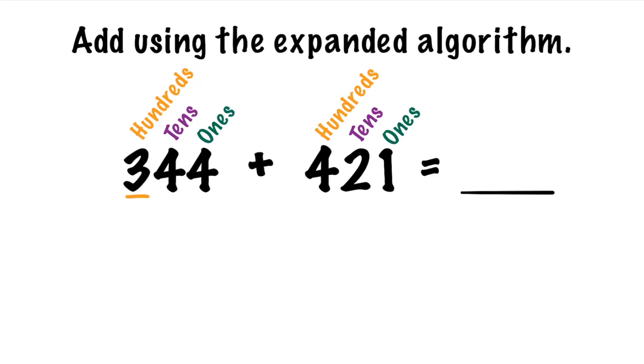The value of the 3 in the hundreds place is actually 300. The 4 in the tens place means we have 4 tens which makes 40. The 4 in the ones place simply means 4 ones.